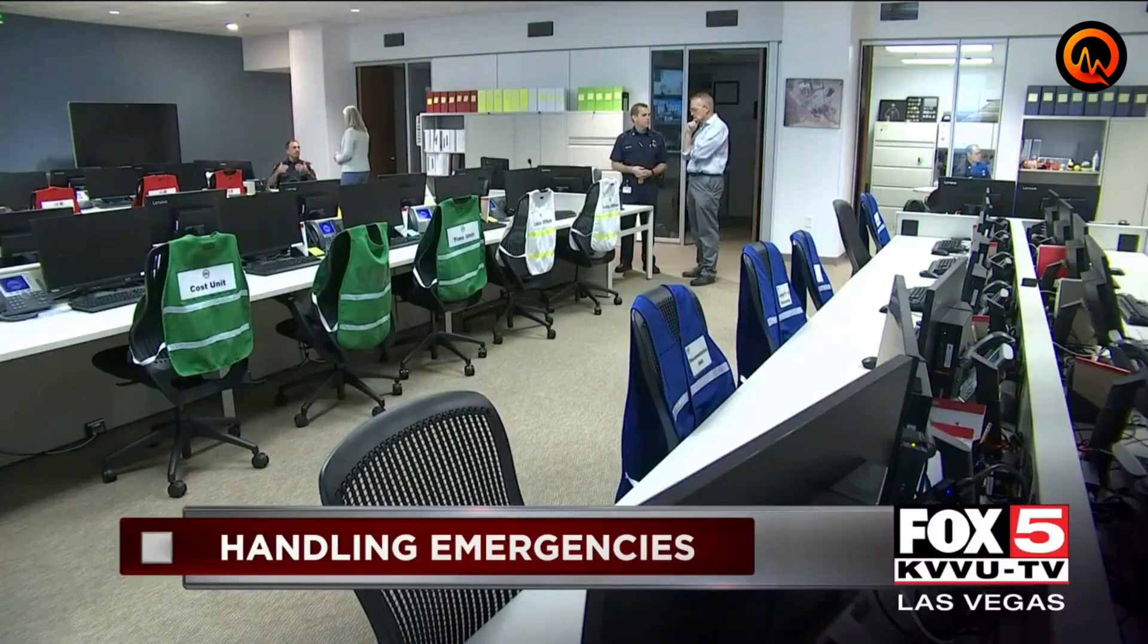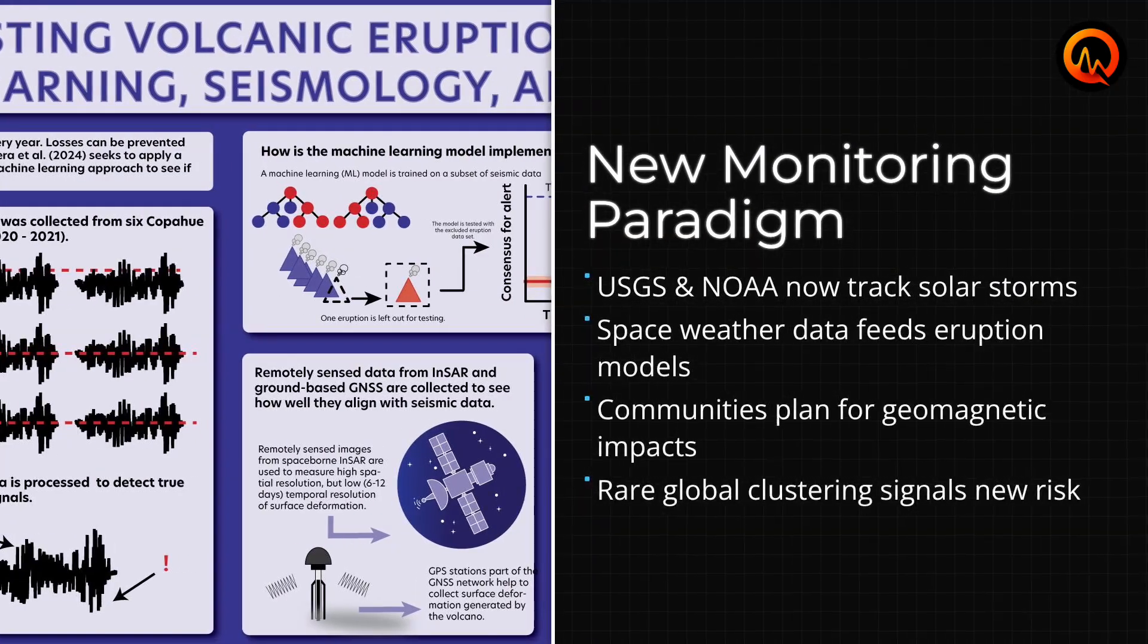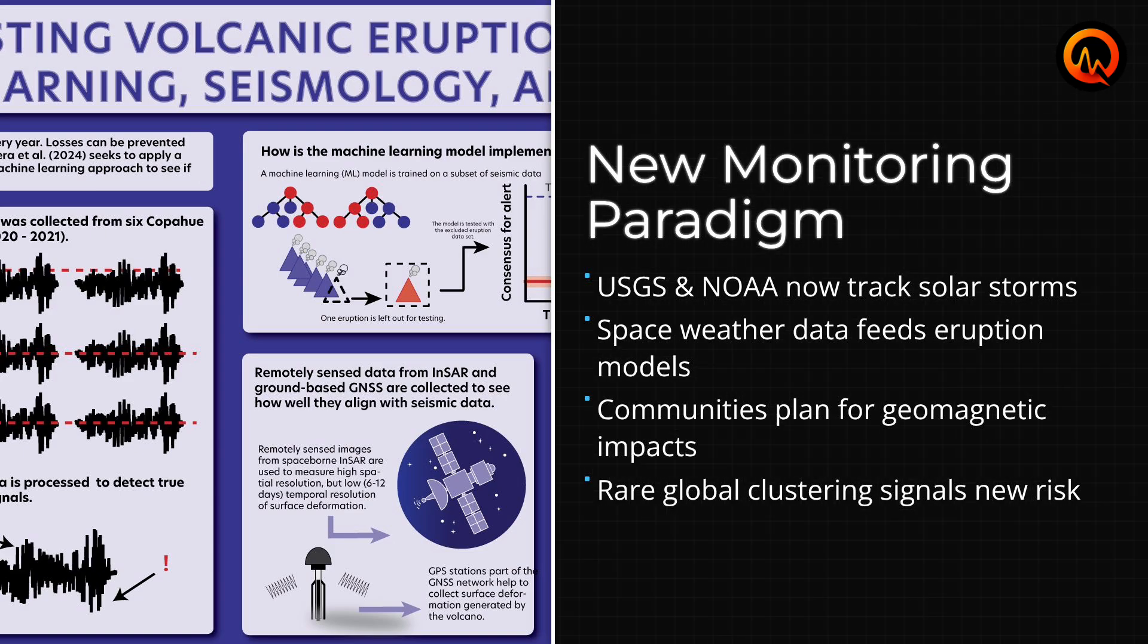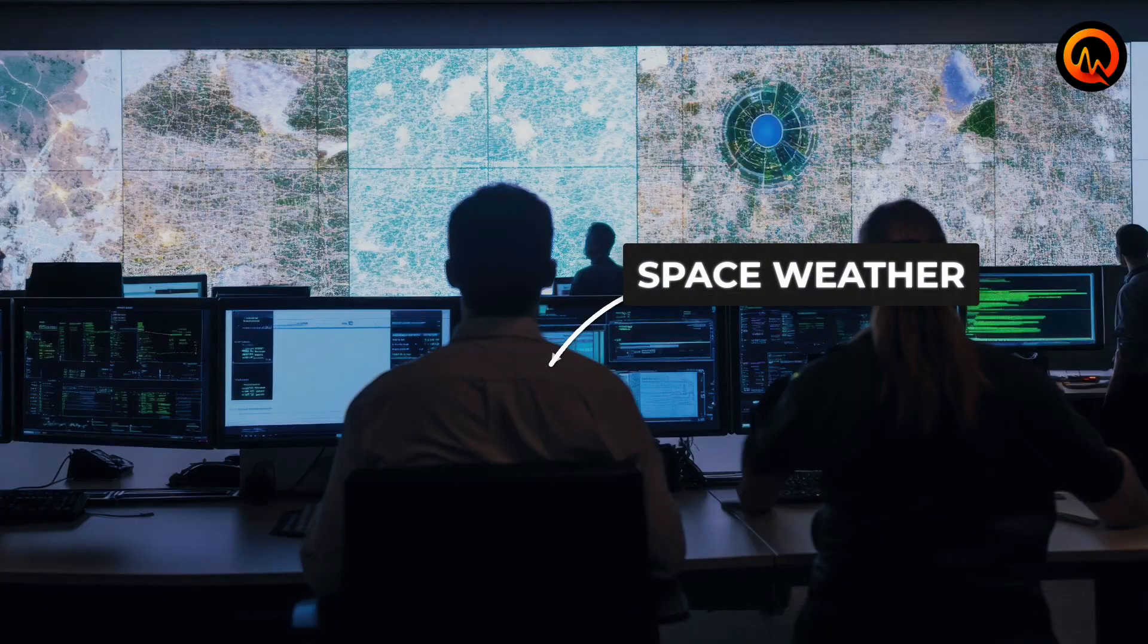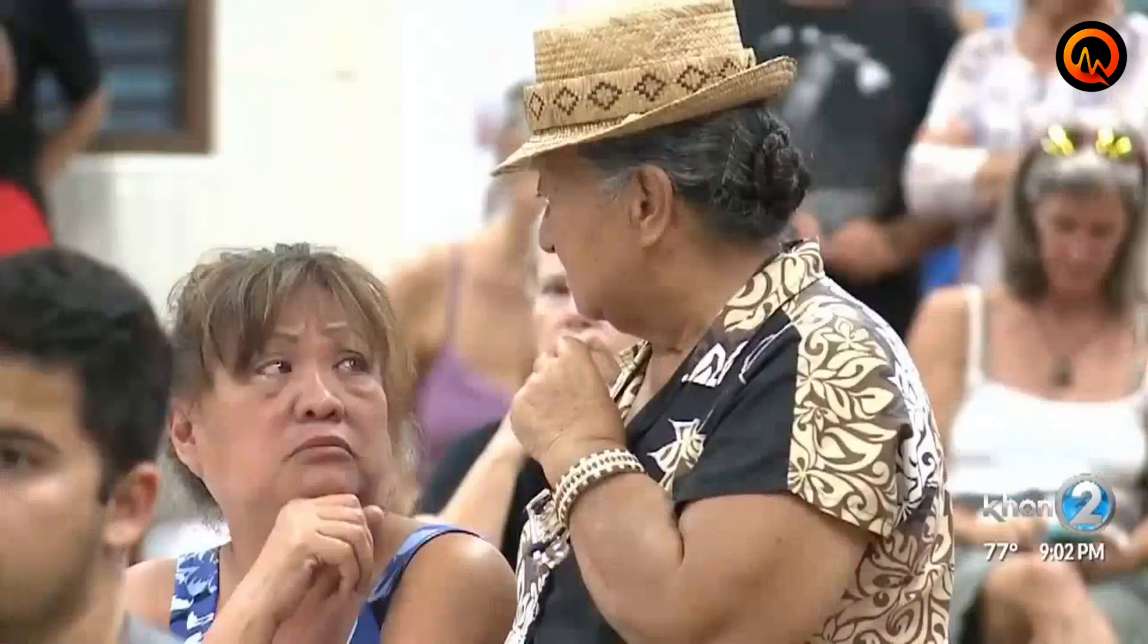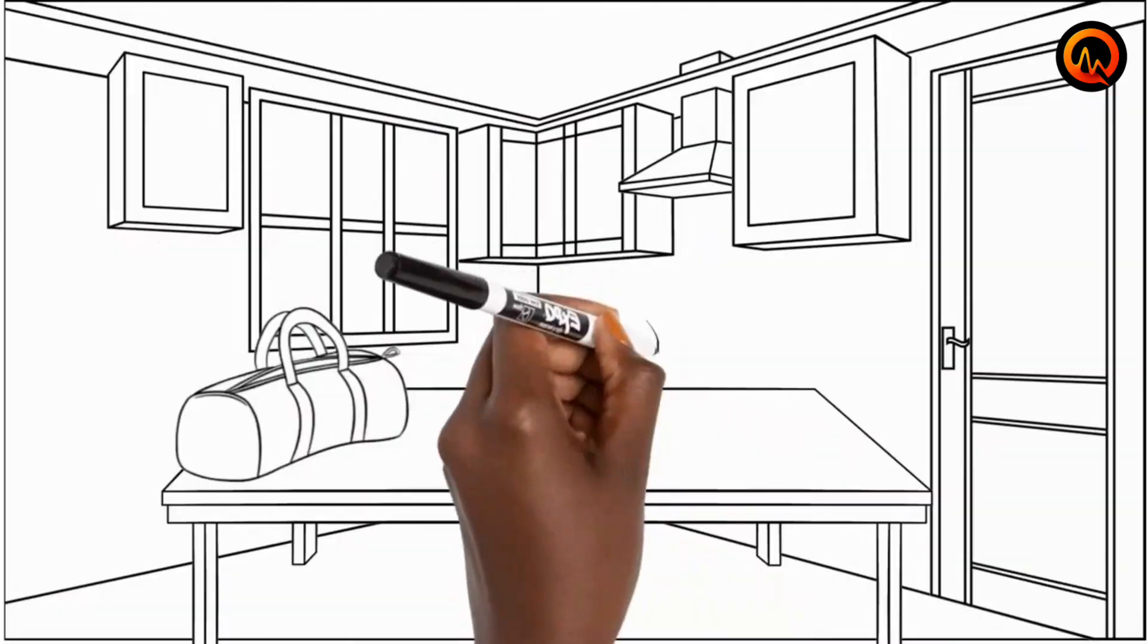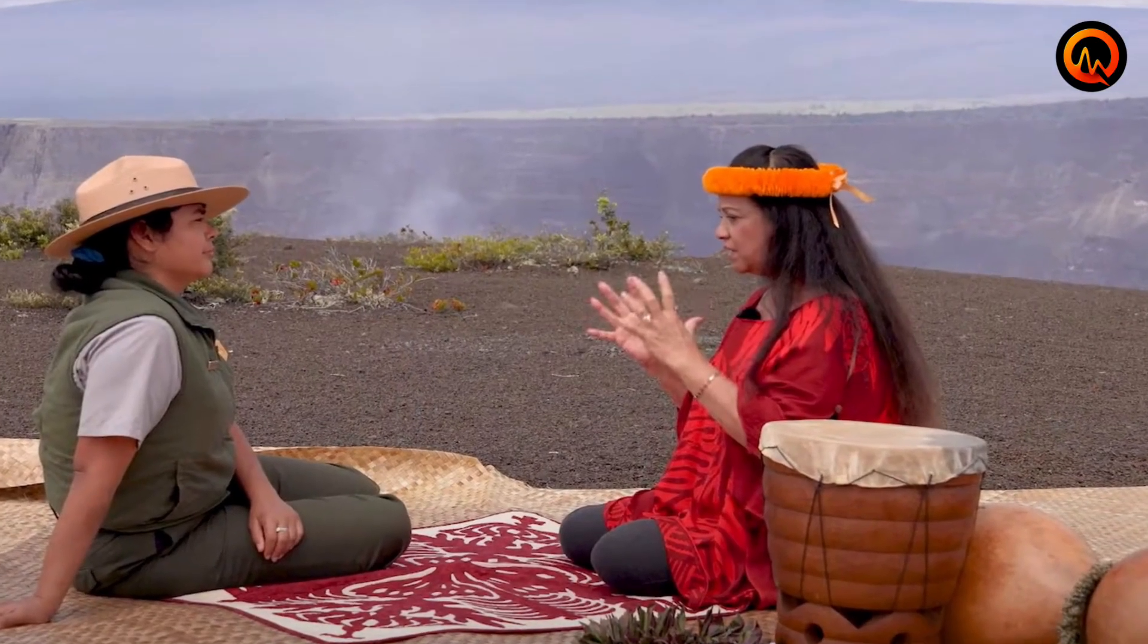For communities near active volcanic zones, this interconnection changes how you should think about preparedness. Traditional volcanic emergency plans focus on local geological indicators: earthquake swarms, gas emissions, and ground deformation. Now you should also monitor space weather forecasts. When major solar flares occur, residents in volcanic regions should review their evacuation routes and emergency supplies. The two-week lag time between intense solar activity and potential volcanic response provides a preparation window that did not exist in previous emergency planning frameworks.